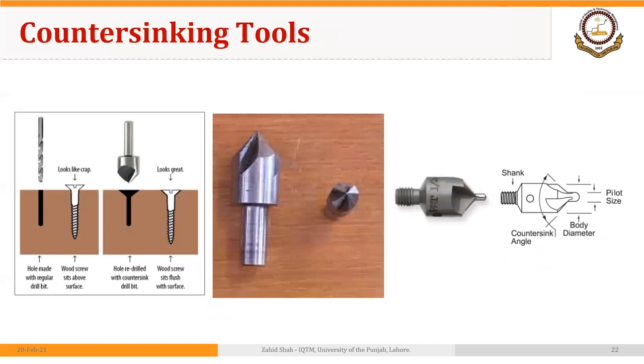We have countersinking tools. If we drill a hole using a drilling operation and we want the head of a screw to fit into the part that we are making and that head is tapered, then we can use countersinking tools, something like this, so that the tapered head of the screw can fit into the workpiece or into the body of the tooling that we are making. This is the countersink angle. Countersinking tools with different angles are available. There is a shank that fits into the spindle or whatever is the tool holding device that we are using.